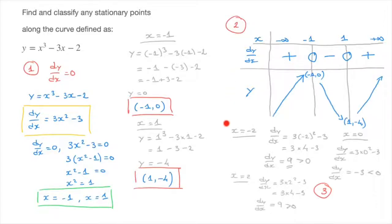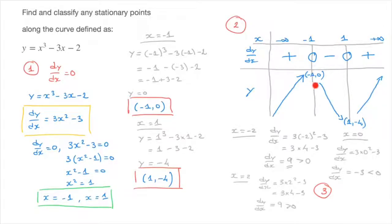Looking at our completed table, things are very clear. As x varies from negative infinity to positive infinity, the curve increases, reaches a maximum at negative 1, 0, then decreases to a minimum at 1, negative 4, then increases again. Therefore, the stationary point negative 1, 0 is a maximum, and the stationary point 1, negative 4 is a minimum.